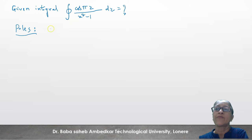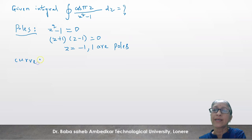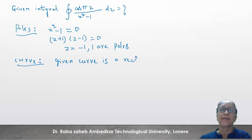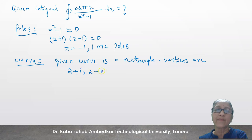After finding poles, we plot the given curve — a rectangle with vertices 2+i (meaning ordered pair (2,1)), 2−i (meaning (2,−1)), −2+i (meaning (−2,1)), and −2−i (meaning (−2,−1)). Plotting these four points and joining them gives the rectangle.